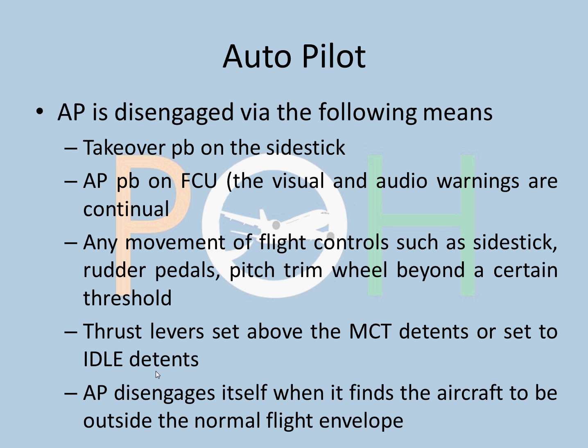How do you disengage the Autopilot? Very important things to know. The standard way is to use the takeover push button on the side stick. You can also press the push button on the FCU, but that will generate a permanent visual and audio warning that you disengaged it using the wrong method. Any movement of flight controls — side stick, rudder pedals, or pitch trim wheel beyond a certain threshold — will also disengage the Autopilot.